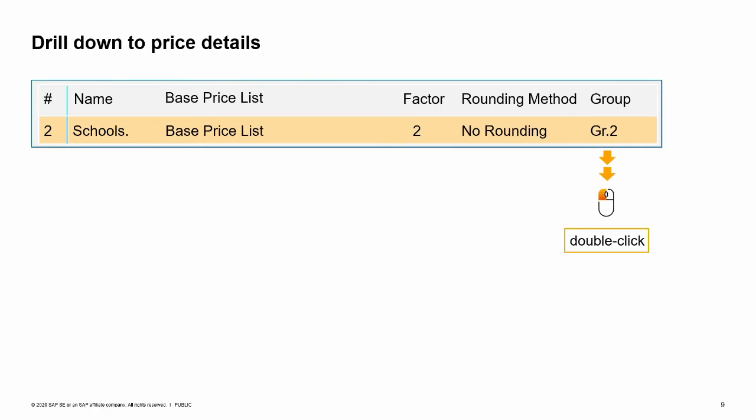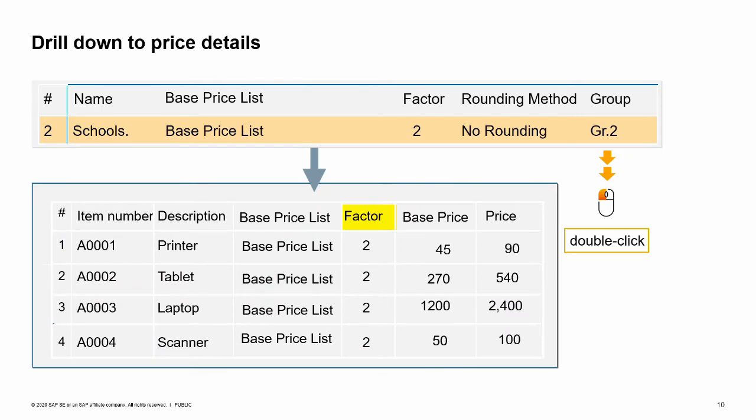You can double-click a row to open the price list to view and maintain the individual item prices. Once you open a price list, you see all the items in the system and the prices assigned. Here we see the school's price list is based on the base price list. The prices are calculated using a factor of 2. Notice that the tablet currently has an automatic price calculation of 540, which is twice the base price of 270.